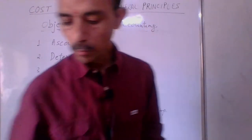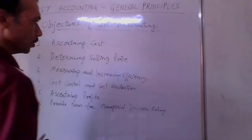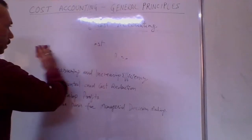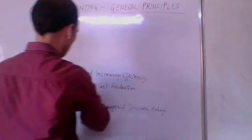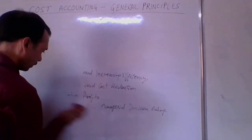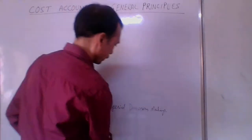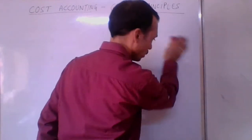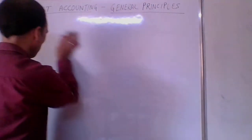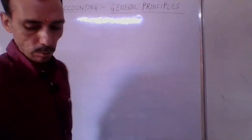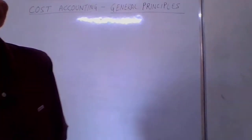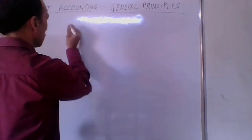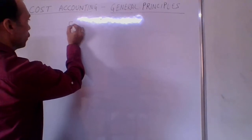Now, how do we measure cost in cost accounting? The next topic is the elements of cost. Basically, to produce any goods or services, we require three kinds of expenses. These are material, labour, and expenses — these are the elements of cost.